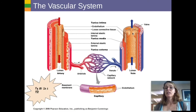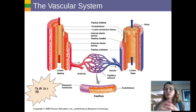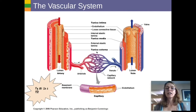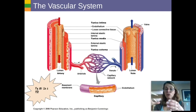Vessels have three layers — 'tunica' means layer. The inner layer, the tunica intima, is always smooth and frictionless, made with simple squamous epithelium so there's little resistance to blood. The middle layer, the tunica media, has smooth muscles that can make the vessel constrict or dilate. The outermost layer is an elastic layer called the tunica externa. Arteries have an additional elastic layer that helps them recoil after blood is squirted into them and they stretch open.